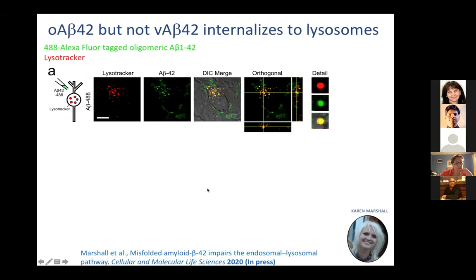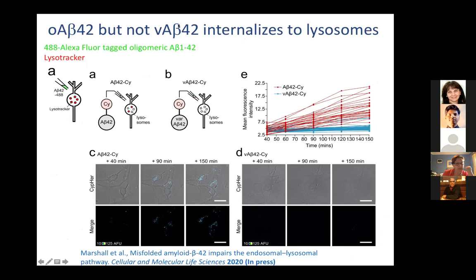First, we showed that oligomeric Abeta-42 is internalized but the variant isn't. You can see the increase in fluorescence as it goes through into the acidic compartments, whereas the variant shown in blue is not being internalized.